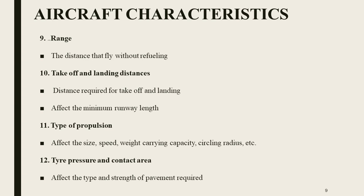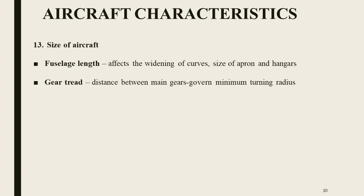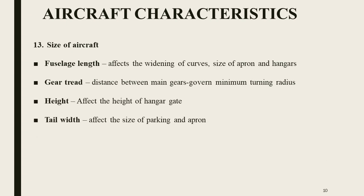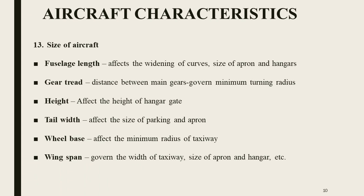Tire pressure and contact area will affect the type and strength of the pavement required. Finally, size of aircraft — there are many terms included in this. Fuselage length affects the widening of curves, size of apron and hangars. Gear tread is the distance between the main gear and governs the minimum turning radius. Height affects the height of hangar doors. Tail width affects the size of parking and apron. Wheel base affects the minimum radius of taxiway. Wingspan governs the width of taxiway, size of apron and hangars, etc.